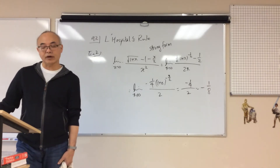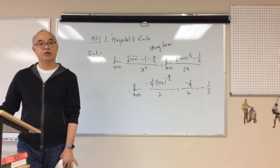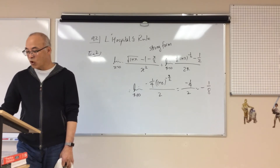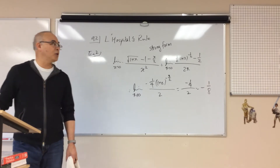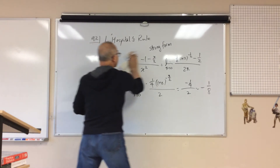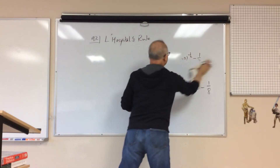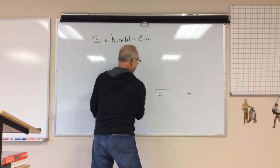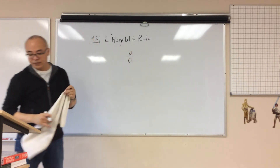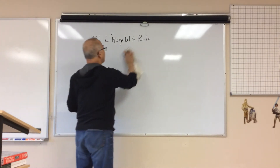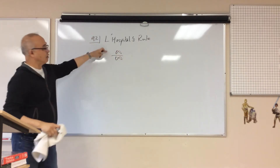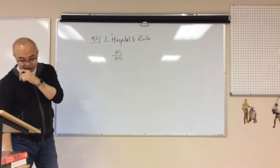You can look at example number 3 on your own. Now let's go ahead and start with a different form of L'Hopital's rule. The form we've looked at so far was 0 over 0. We're now going to do a form where we get infinity over infinity.